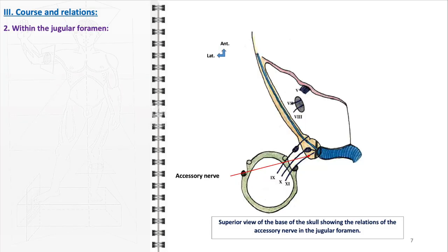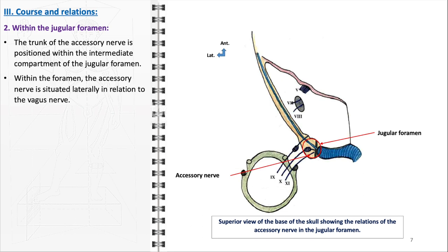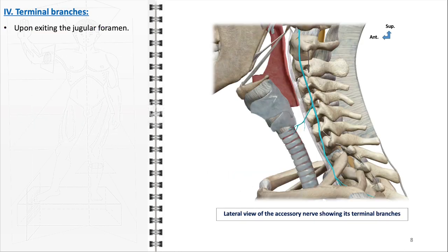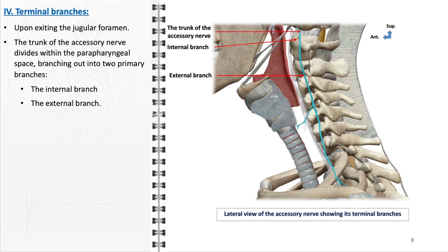Within the jugular foramen, the course of the accessory nerve is both intricate and strategically significant. The trunk of the accessory nerve occupies a specific location within the intermediate compartment of the jugular foramen, maintaining a lateral position relative to the vagus nerve. The internal jugular vein lies anteriorly and medially to the nerve. Upon exiting the jugular foramen, the accessory nerve undergoes a significant division within the parapharyngeal space, forming two primary branches: the internal branch and the external branch, each with distinct pathways and functions.